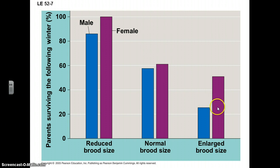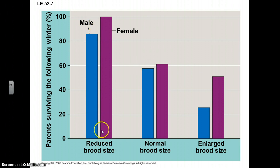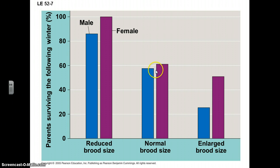When they experimentally enlarged the brood size for these birds, survivorship wasn't so good. When they reduced it, survivorship was a lot better, but you have fewer offspring being produced. In the larger brood situation, you have too many. So the trade-off is that you produce the average size: survivorship isn't quite as high, but you have more offspring, so it should average out.